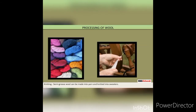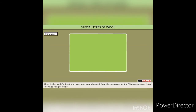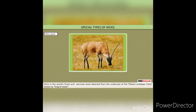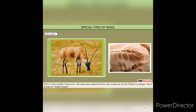Semi-processed wool can be made into yarn and knitted into sweaters. Special Types of Wool — Chiru is the world's finest and warmest wool, obtained from the undercoat of the Tibetan antelope Chiru, known as King of Wool.